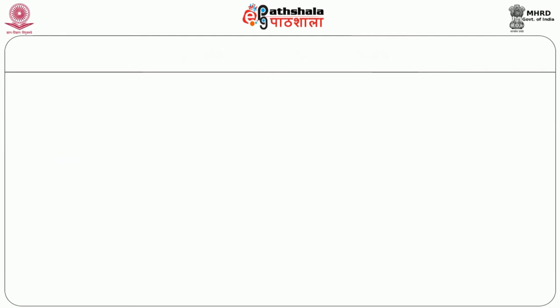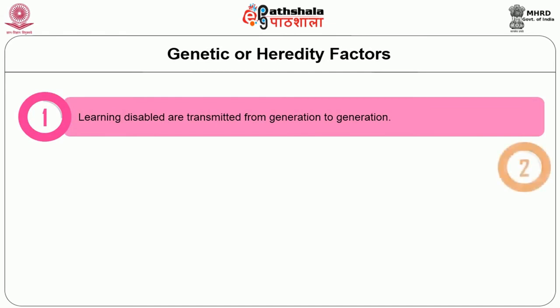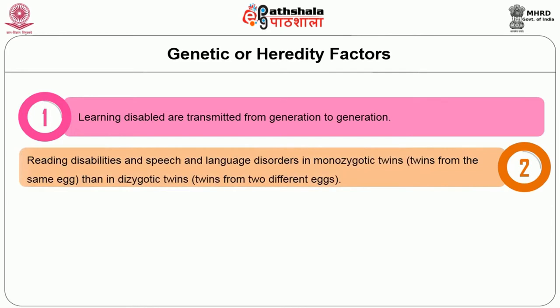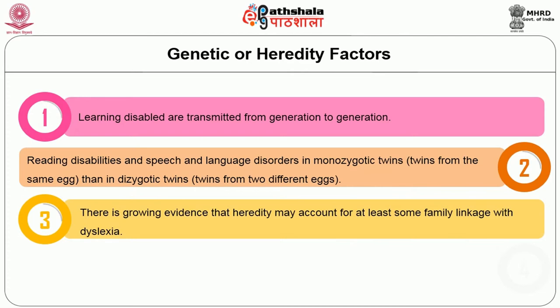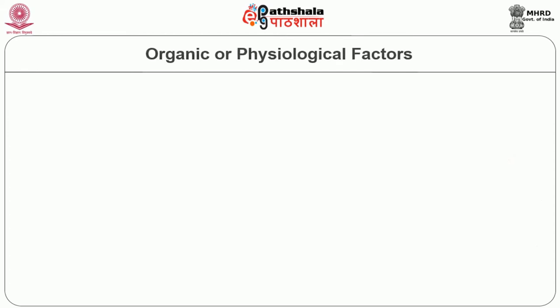The first cause of learning disabilities is genetic or hereditary factors. Learning disabilities are transmitted from generation to generation. Reading disabilities and speech and language disorders are more common in monozygotic twins than in dizygotic twins. There is growing evidence that hereditary factors may account for at least some family linkage with dyslexia. Genes connected to chromosomes 6 and 15 are said to play a role in the hereditary transmission of reading disabilities.